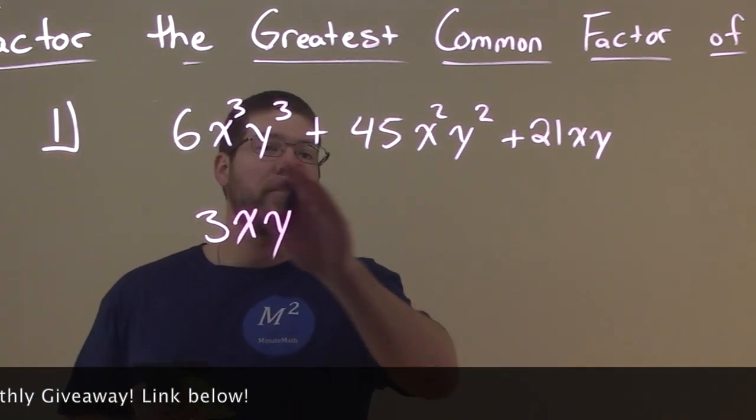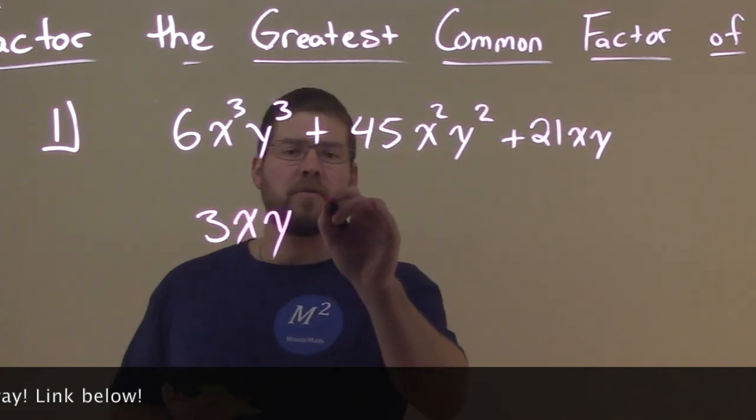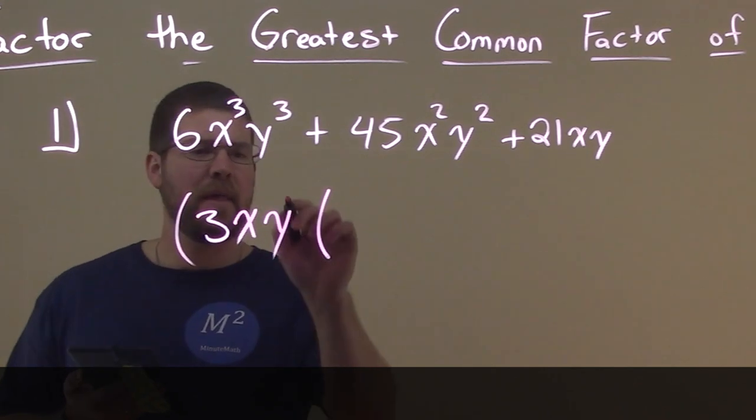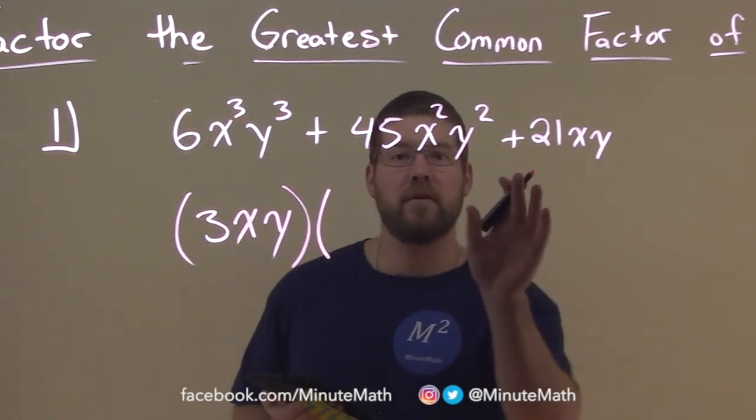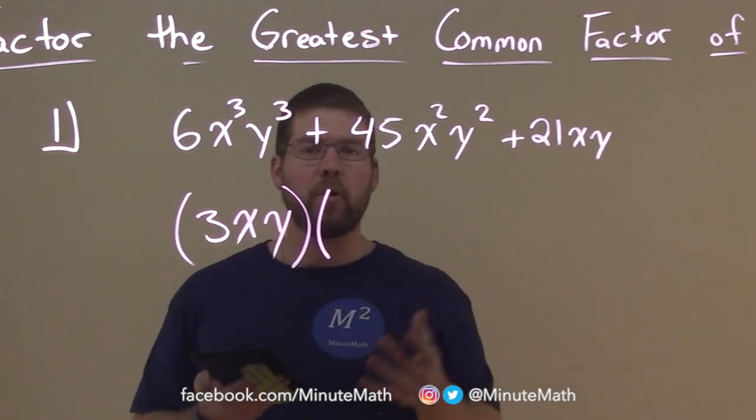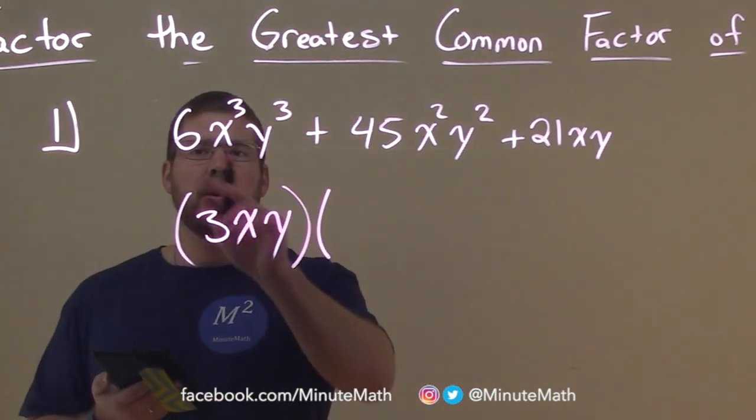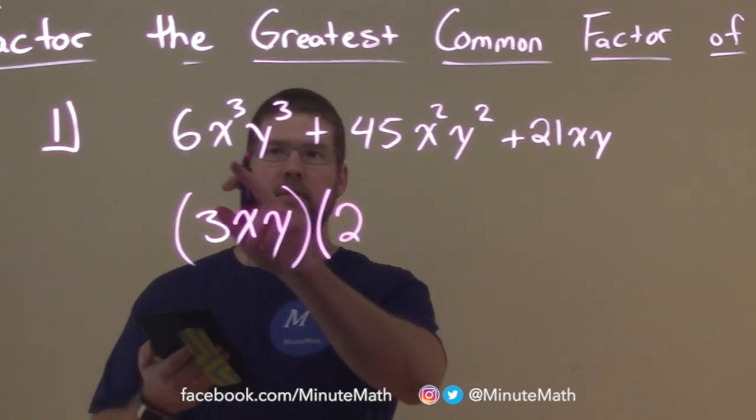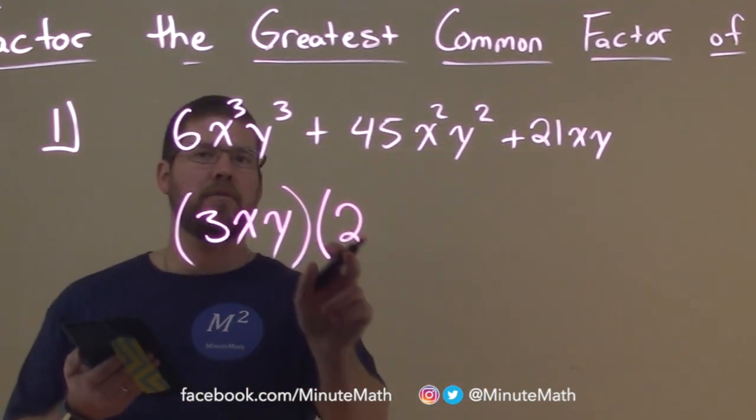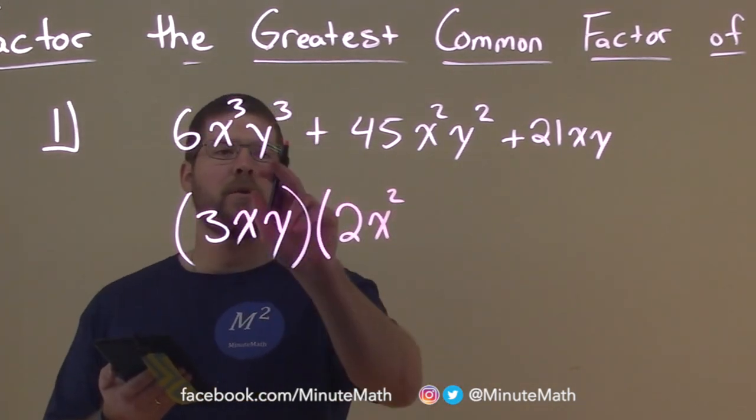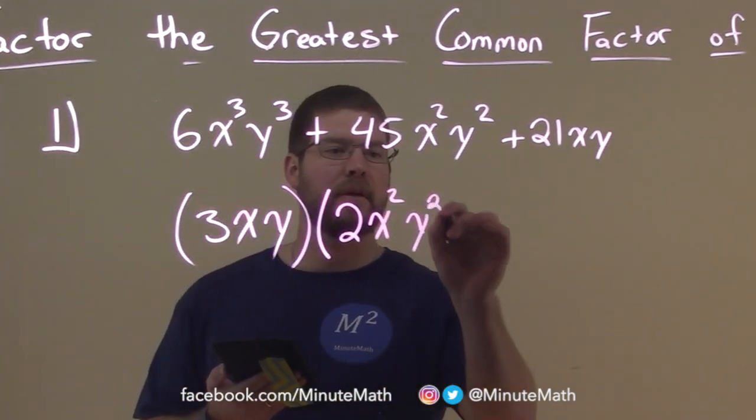Now we've gone through each of the possible terms. So we've pulled out 3xy, and that will be multiplied by what's going to be left over. We're seeing what happens if we pulled out each one from its corresponding value. 3 goes into 6 two times, so we have a 2 here. In the first term, we pulled out 3, we have 2 left over. We pulled out x, so we have 2 x's left over. And we pulled out y, so we have 2 y's left over.